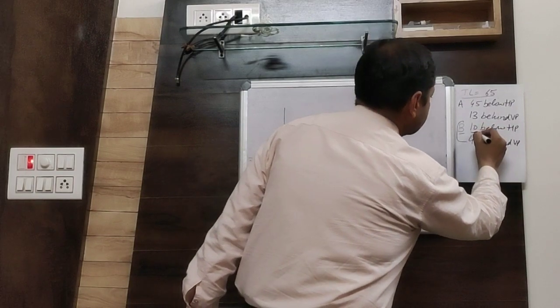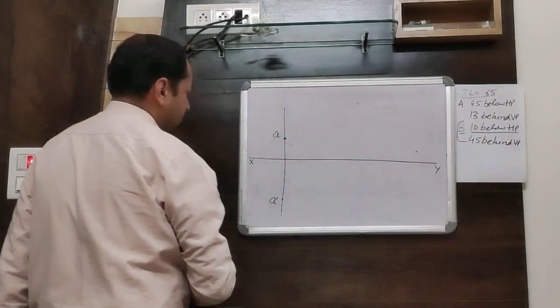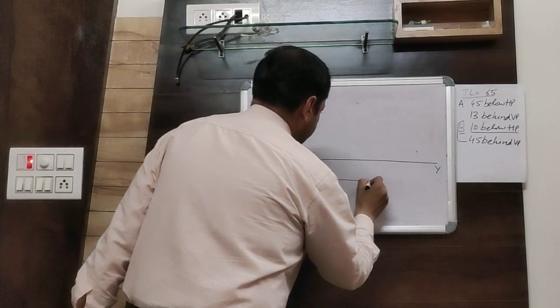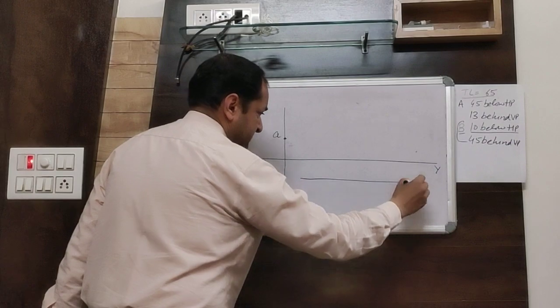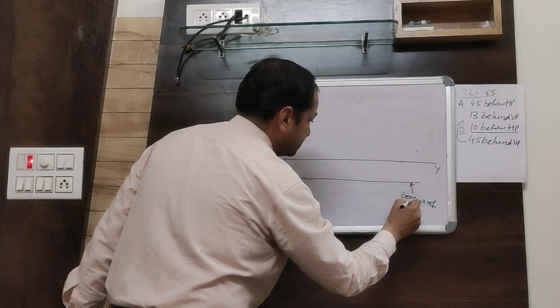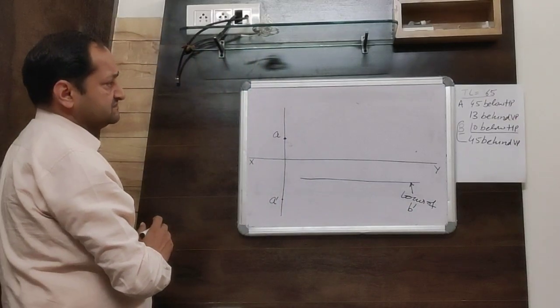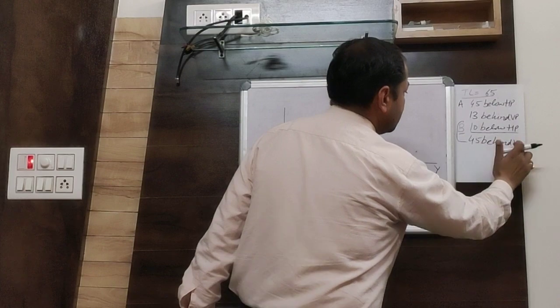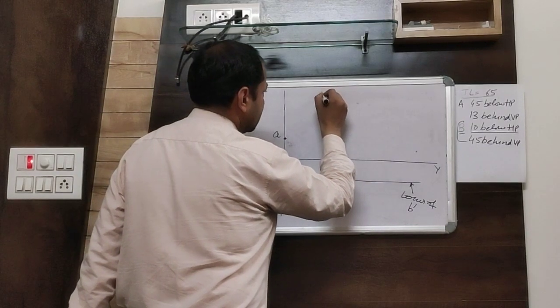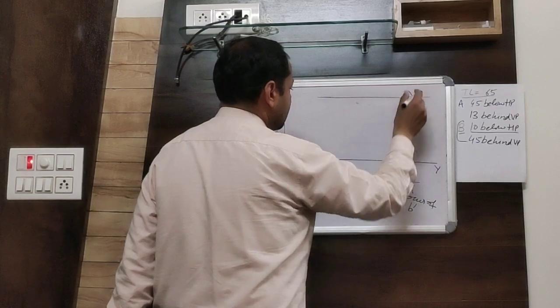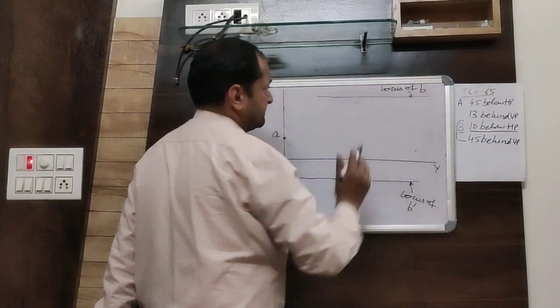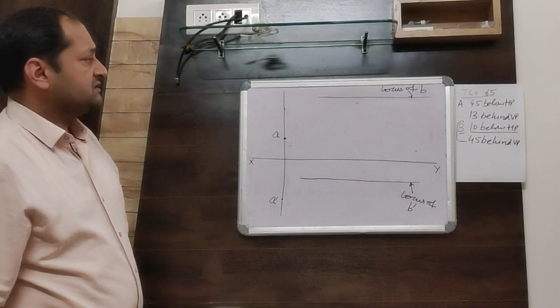So, you can take point B is 10mm below HP. Draw a horizontal line at 10mm below the reference line, this is the locus of B dash. Similarly, 45mm behind VP. Draw a horizontal line at 45mm above the reference line. This is giving you the locus of top view of B.